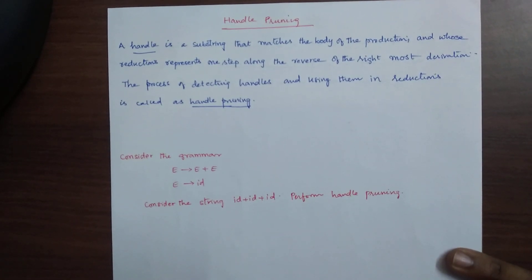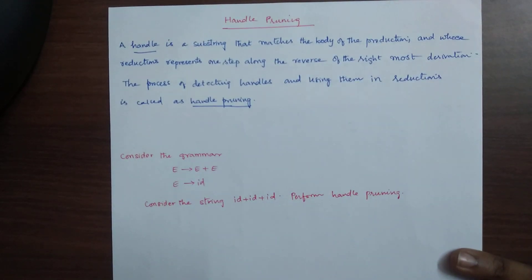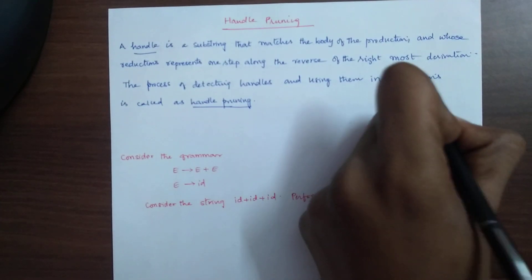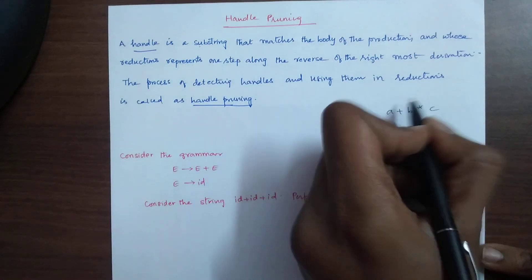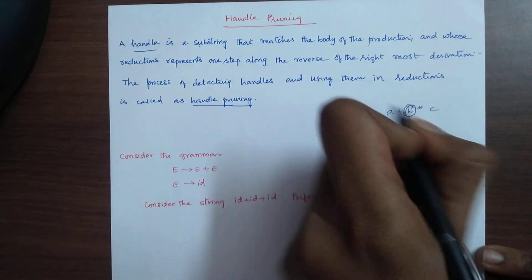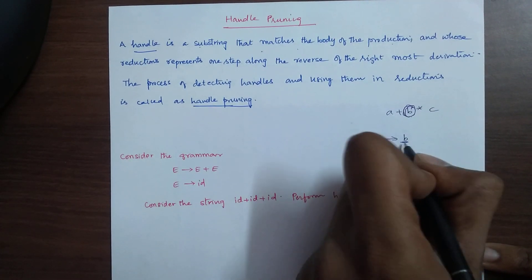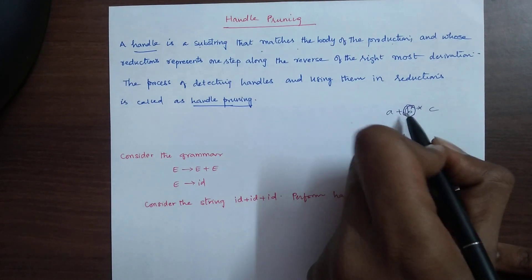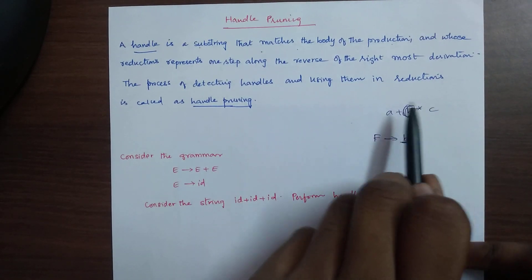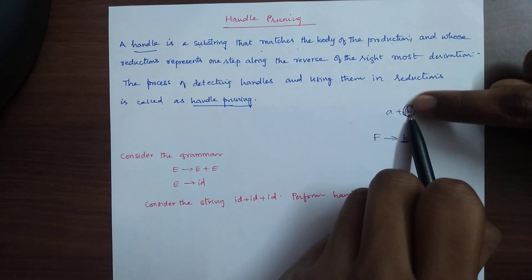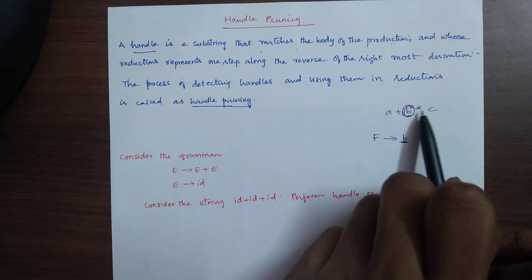Handle pruning. A handle is a substring that matches the body of a production. Suppose we have a string that matches the body of a production — for example, F tends to small b. Small b is a substring that matches the body of a production, where the head is capital F and the body is small b. So small b is a handle.